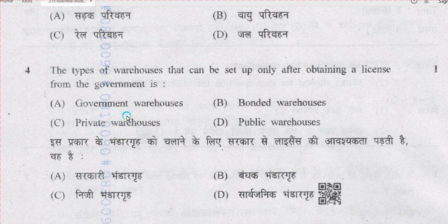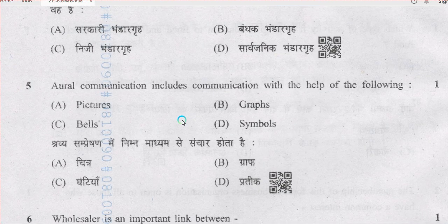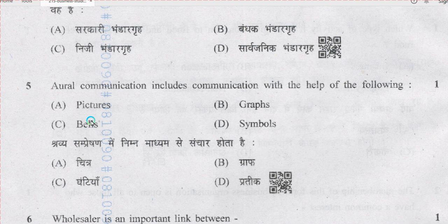Question number 4: the type of warehouses that can be set up only after obtaining a license from the government is D, public warehouses. Question number 5: oral communication includes communication with the help of the following. Oral means relating to sense of hearing, so the correct option is C, bells.